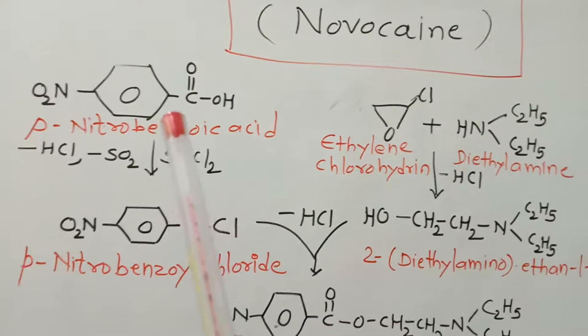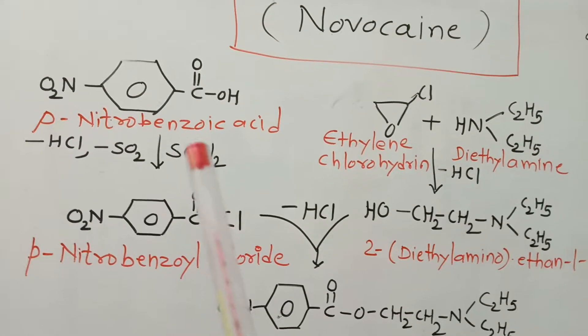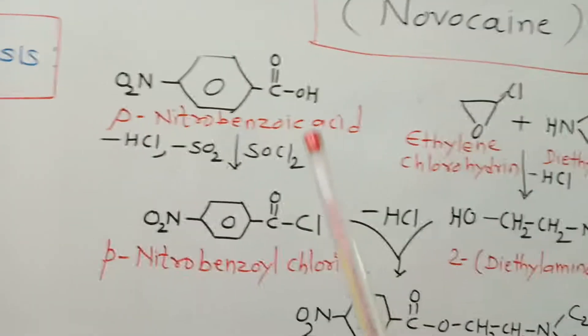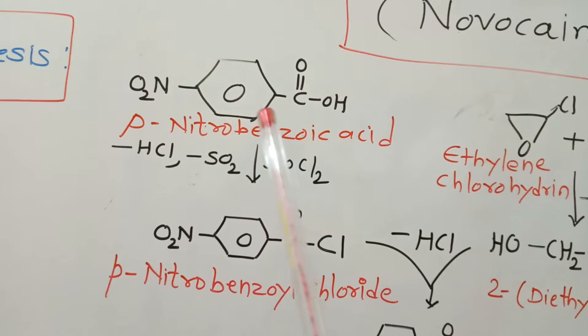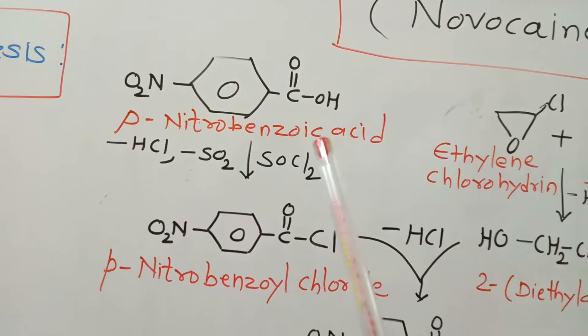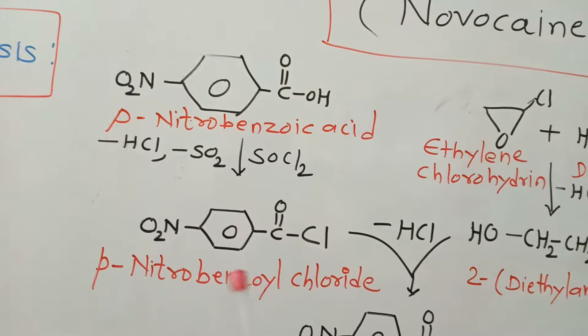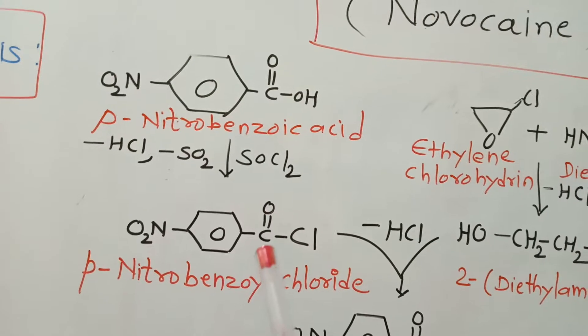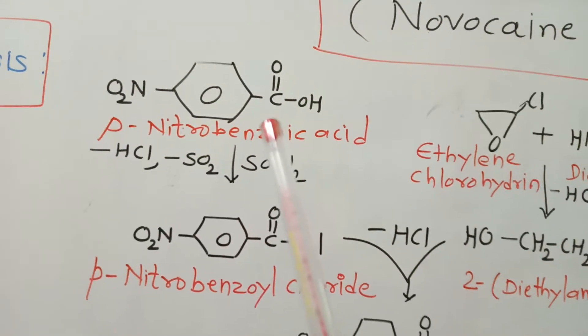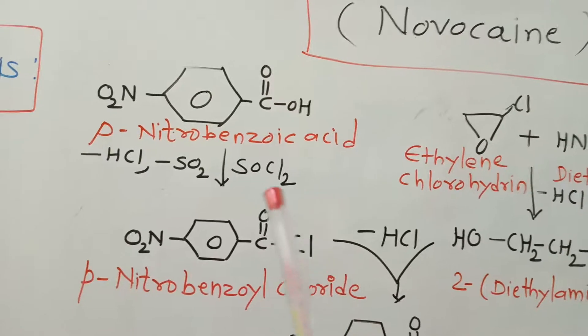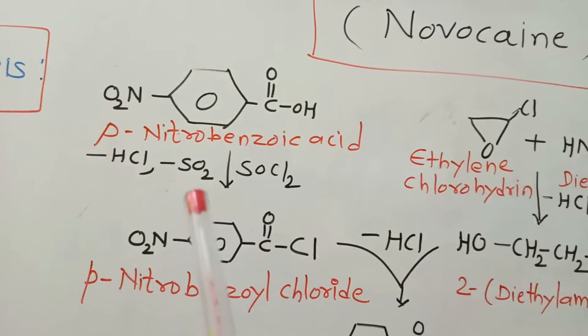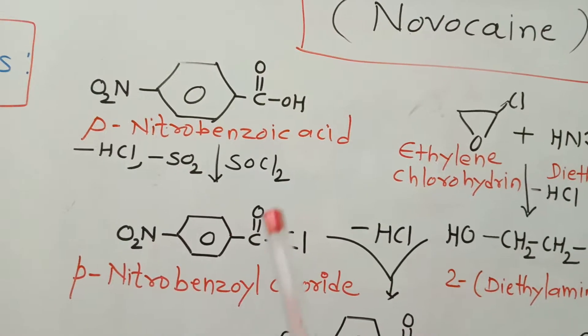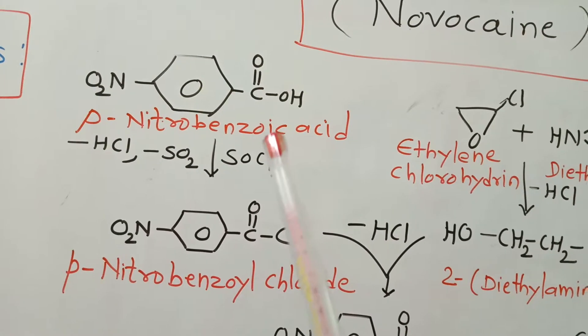The synthesis takes place in two parts. The first part is the conversion of para-nitrobenzoic acid into para-nitrobenzoyl chloride, where the acid is treated with thionyl chloride. There is release of HCl and sulfur dioxide. The reaction involved is nucleophilic substitution.